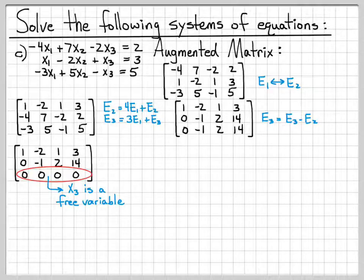But in general, x3 is what we call a free variable. You might wonder why is x3 the free variable? I'm allowed to interchange rows, right? So I could make the row of 0s be the top row, and then x1 would be the free variable.